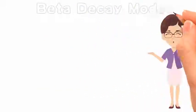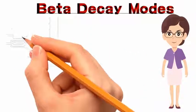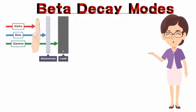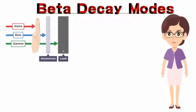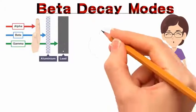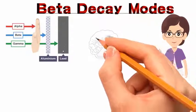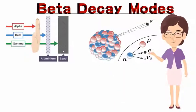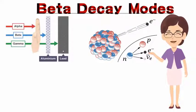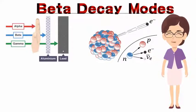Beta particles are a type of ionizing radiation and for radiation protection purposes are regarded as being more ionizing than gamma rays but less ionizing than alpha particles. Beta decay mode β⁻ decay, electron emission: in this type of emission an unstable atomic nucleus with an excess of neutrons may undergo β⁻ decay, where a neutron is converted into a proton, an electron, and an electron antineutrino.